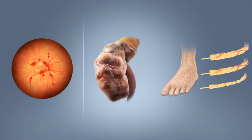The term type 1 diabetes has replaced several former terms, including childhood onset diabetes, juvenile diabetes, and insulin-dependent diabetes mellitus. Likewise, the term type 2 diabetes has replaced several former terms, including adult onset diabetes, obesity-related diabetes, and non-insulin-dependent diabetes mellitus. Beyond these two types, there is no agreed-upon standard nomenclature. Diabetes mellitus is also occasionally known as sugar diabetes, to differentiate it from diabetes insipidus.